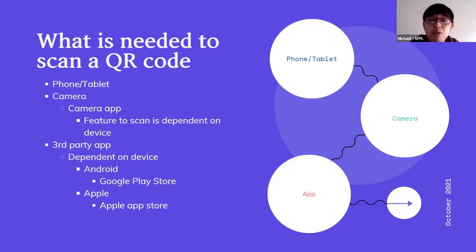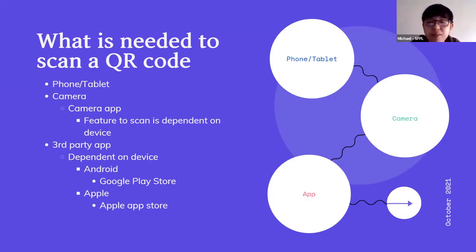But if you have a device that doesn't have an option to scan QR codes, or if you try to scan one and nothing happens, that means the camera app on your device doesn't have the ability to scan a QR code. That is when you would have to download a third-party app — from the Apple App Store if you have an iPhone or iPad, or the Google Play Store if you have an Android device.